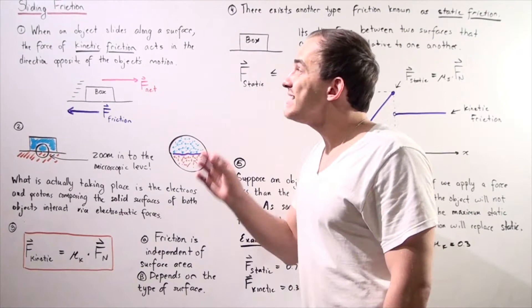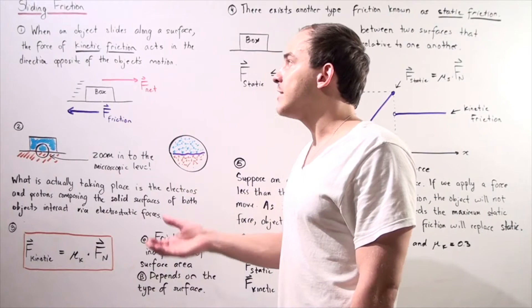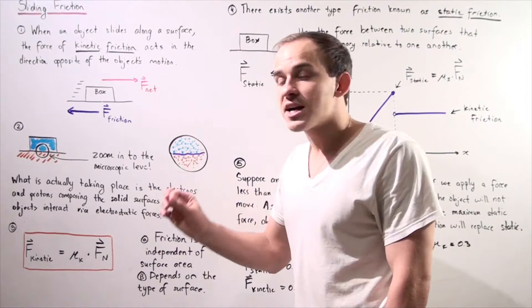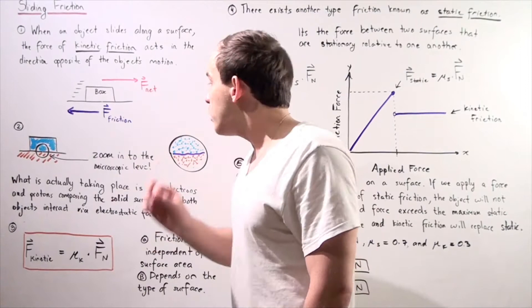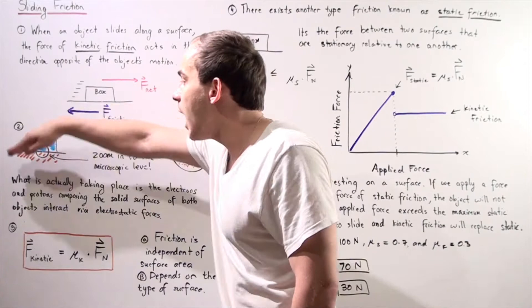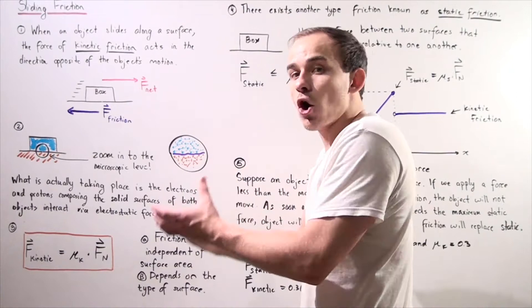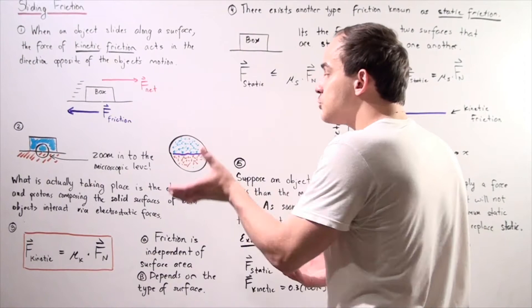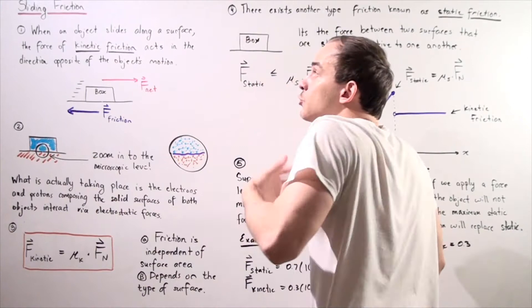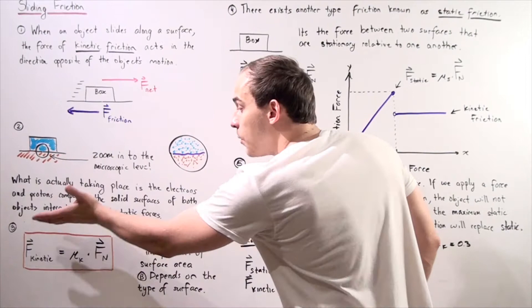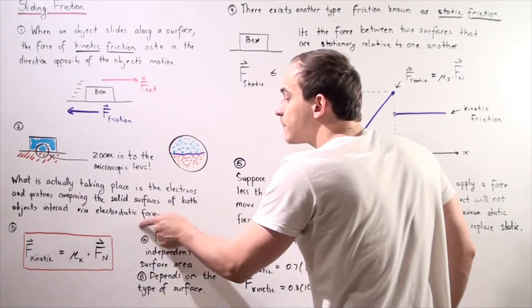What exactly is kinetic friction? In other words, what creates kinetic friction, and in general, what creates friction? If we zoom in onto the microscopic level and examine the area between the two surfaces, we will see that the electrons of the atoms of object one, our box, interact with the protons on the atoms of the second object, our actual surface. These interactions between the negatively charged electrons and the positively charged protons create kinetic friction. What is actually causing friction is the electrons and protons composing the solid surfaces of both objects interacting via electrostatic forces — electrostatic interactions.